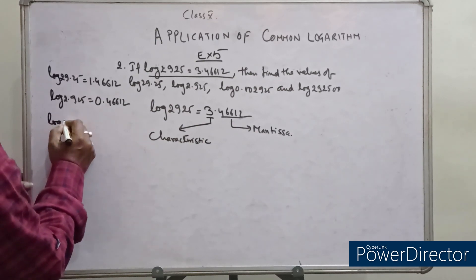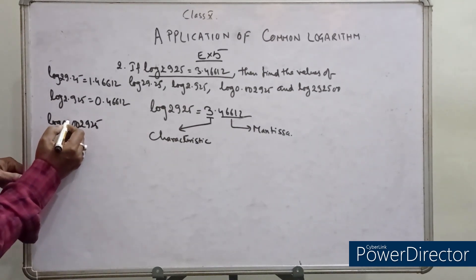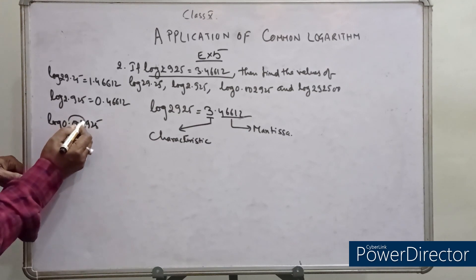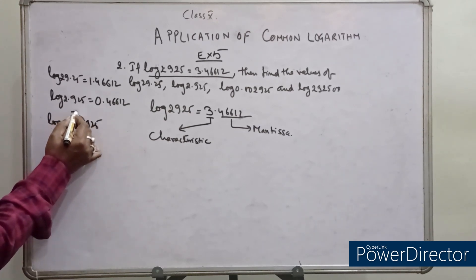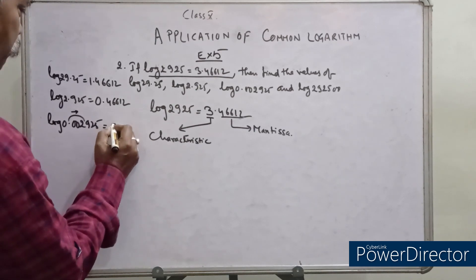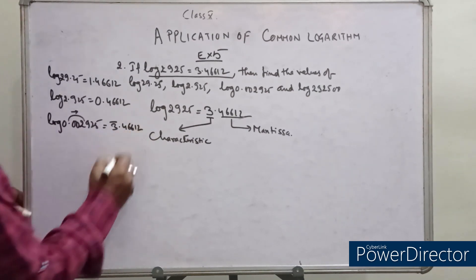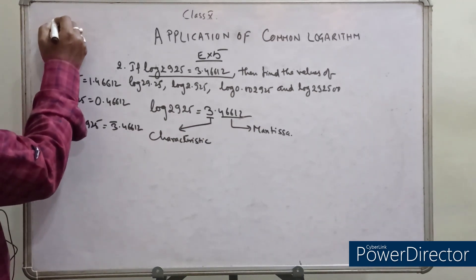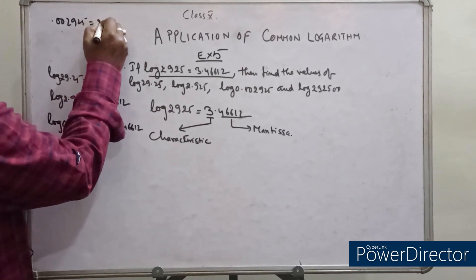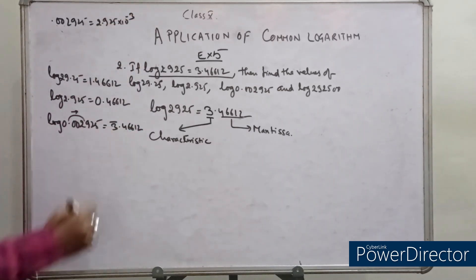For log 0.002925, the characteristics is found by shifting the decimal to the first non-zero digit. We cross 3 digits, so the characteristics is 3 bar (minus 3). The mantissa 2925 gives 0.46612. In standard form, 0.002925 is 2.925 into 10 to the power of minus 3, so minus 3 is the characteristics.